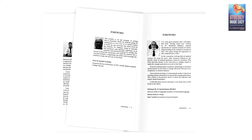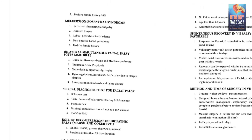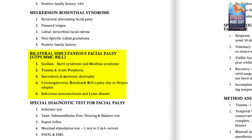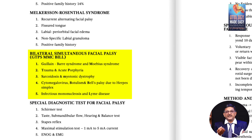For bilateral facial palsy, the mnemonic is GTPS — Get Together Based Separately in metabolic conditions. G means Guillain-Barré syndrome, P means porphyria, T means trauma, and S means sarcoidosis.